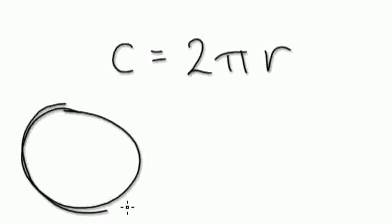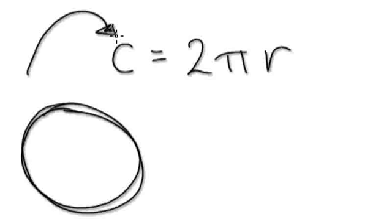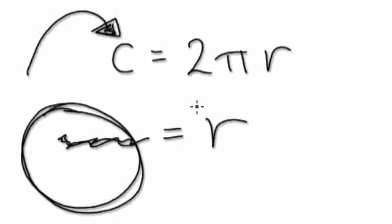So from this formula here, C equals 2πr, if you're given the circumference, which is the distance around here, then put that circumference into the C, and then rearrange it, so that R is on its own, equals something over here. So it's saying the radius is this thing here.